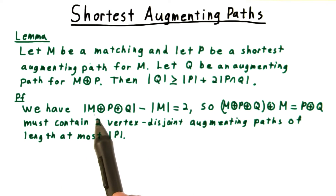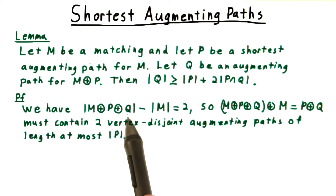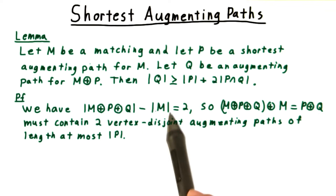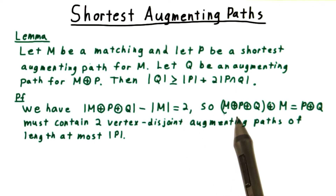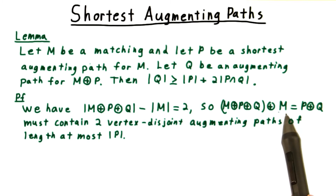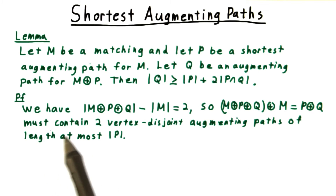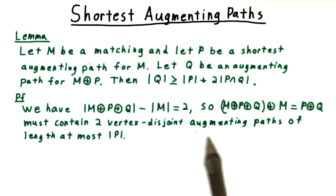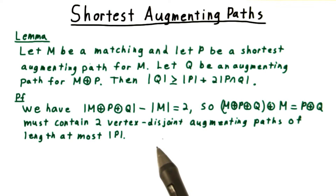we first observe that the size of m augmented by p and augmented by q minus the size of the original matching m is equal to 2. So the symmetric difference between the augmented version and the original, which is also equal to the symmetric difference between p and q, must contain two vertex-disjoint augmenting paths of length at most |p|. They couldn't be shorter than p, otherwise p wouldn't be a shortest path.